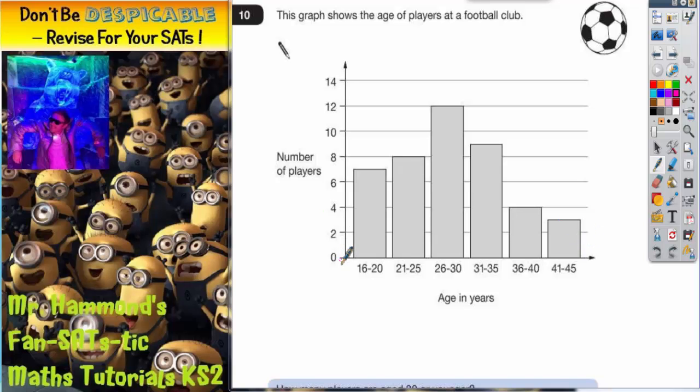It's also worth noting that on the scale up the side, we're going up in twos. So 2, 4, 6, 8, 10, 12. Each little gap up the side is worth 2.